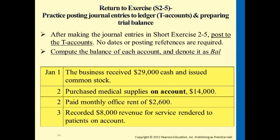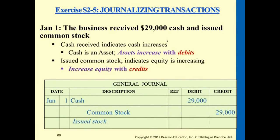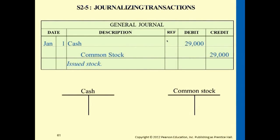Before we get to trial balance, let's do the posting. I'll show you a few examples of posting these transactions — these are the journal entries we did a little bit earlier. We have four of them. To post to T-accounts, you open up two accounts: post the debit side to cash, and the credit side to common stock. The journal entry and ledger contain the same information, just in a different format.